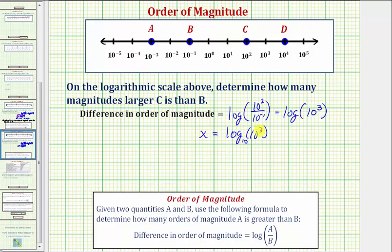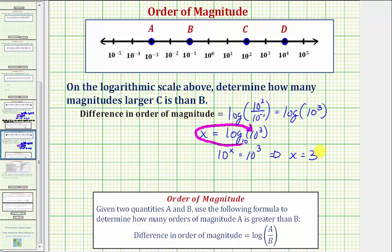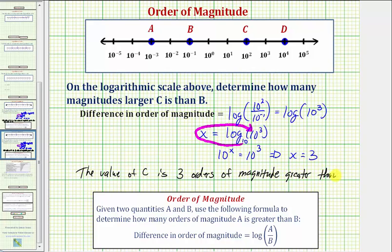Again, if we don't recognize that x is going to be three, we would write the equivalent exponential equation, which would be ten raised to the power of x is equal to ten to the third. So if ten to the x equals ten to the third, because these are equal and the bases are the same, the exponents must be the same, and therefore x equals three. This tells us the value of c is three orders of magnitude greater than the value of b. I hope you found this helpful.